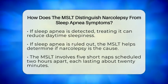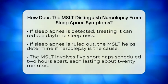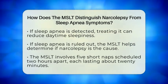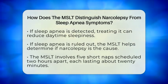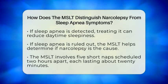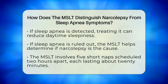The test involves five short naps scheduled two hours apart, each lasting about 20 minutes. During each nap, sensors track how fast you fall asleep and if you enter REM sleep quickly.